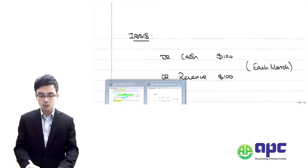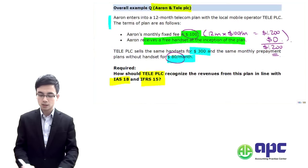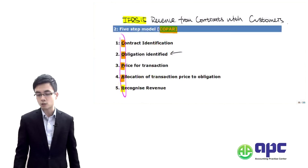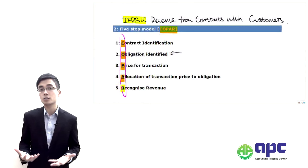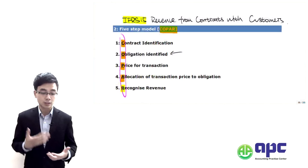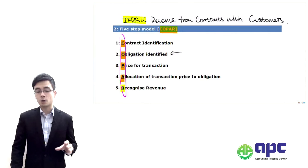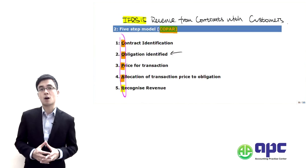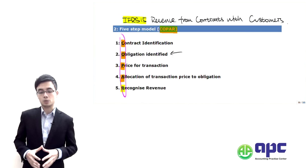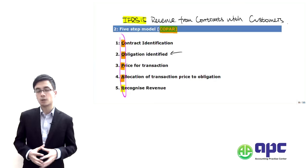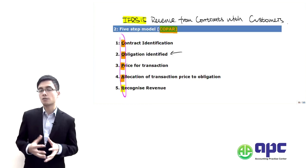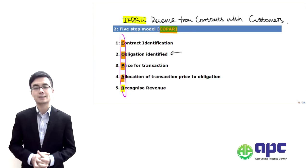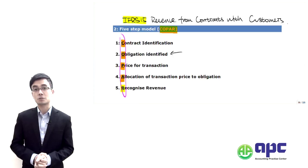That's how we use the five-step model to recognise sales revenue. In the second part of this course, we're going to detail steps one through five, giving you lots of examples to see how we deal with the detailed bits and pieces within the accounting standard. See you then.